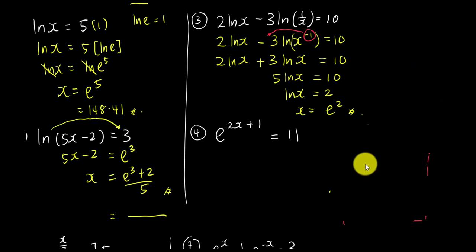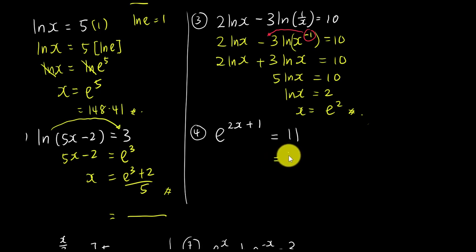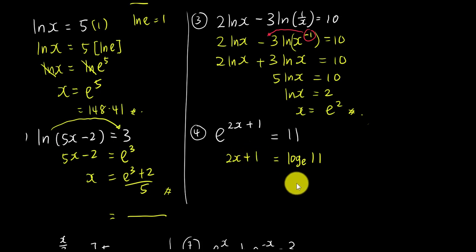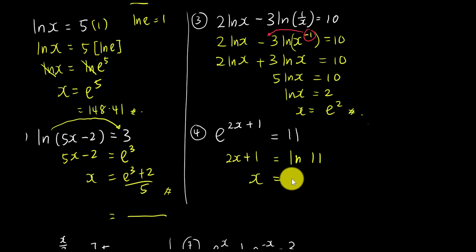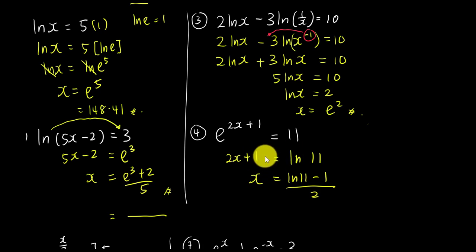For question four: e^(2x+1) = 11. Moving e to the other side gives log_e(11), which we write as ln(11) = 2x + 1. Solving for x: x = (ln(11) − 1) / 2. That's the final answer — you can type it in a calculator if needed.